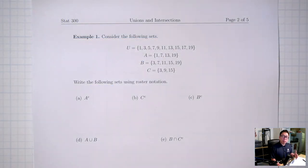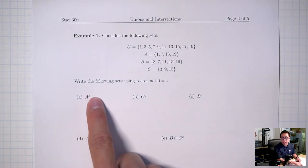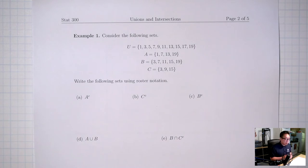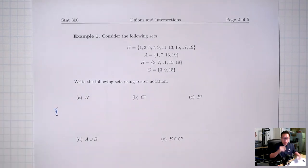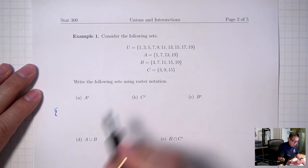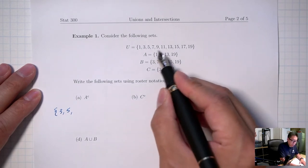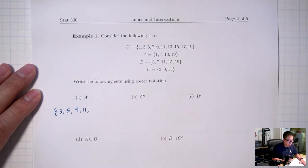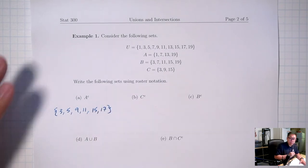Example 1. Here we have a bunch of sets. The first one with a U is our universal set — that's what we consider to be our everything. Then we have sets A, B, and C. Write the following sets using roster notation, which just means I want a list of numbers. The first one, A with a little C, means complement — this is a review from last time — and all this means is I want all the numbers that are not in A. So going through the universal set: 3 and 5, then 9 and 11, then 15 and 17 are not in A.